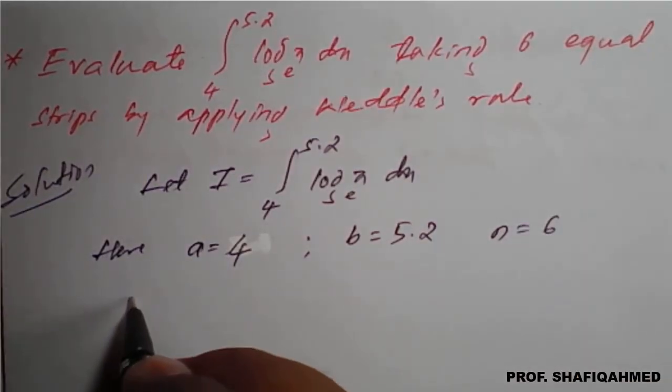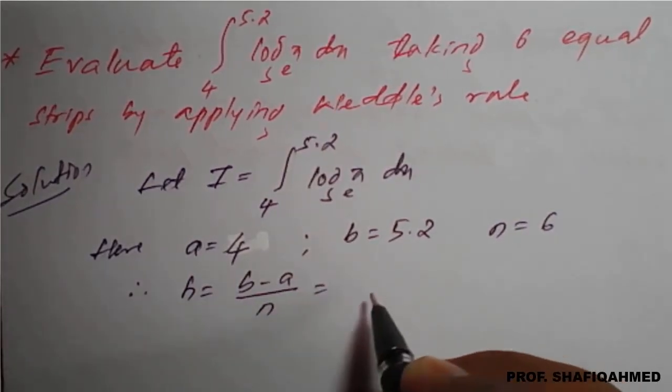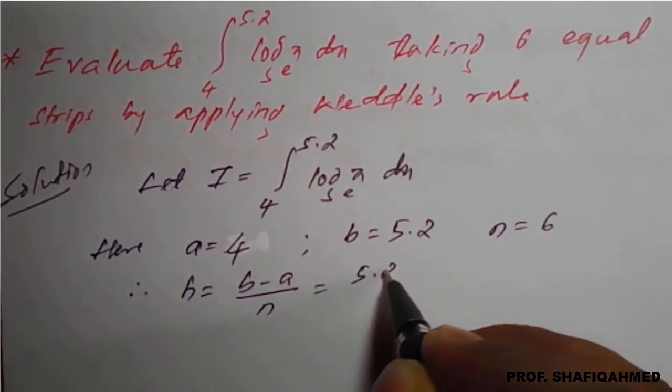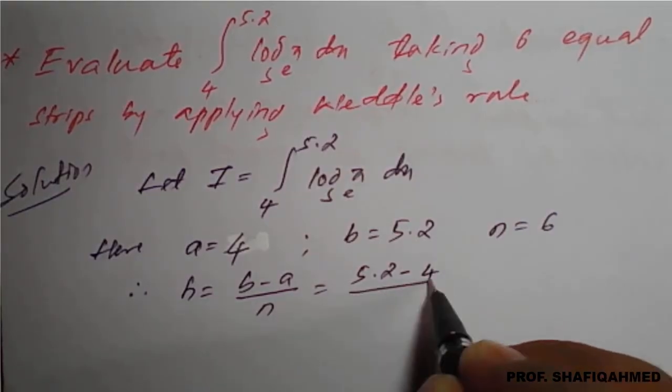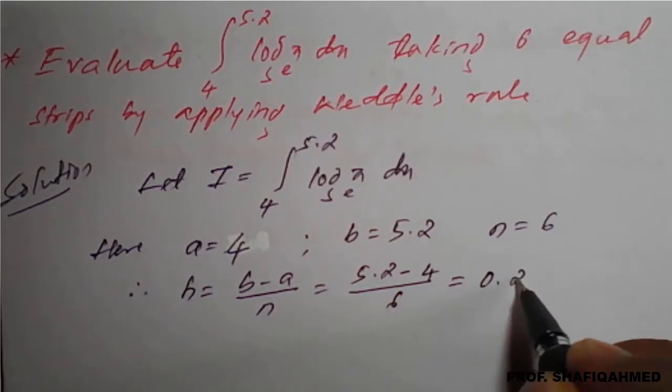Therefore, h is b minus a divided by n. So h equals 5.2 minus 4 divided by 6, which on simplification becomes 0.2.